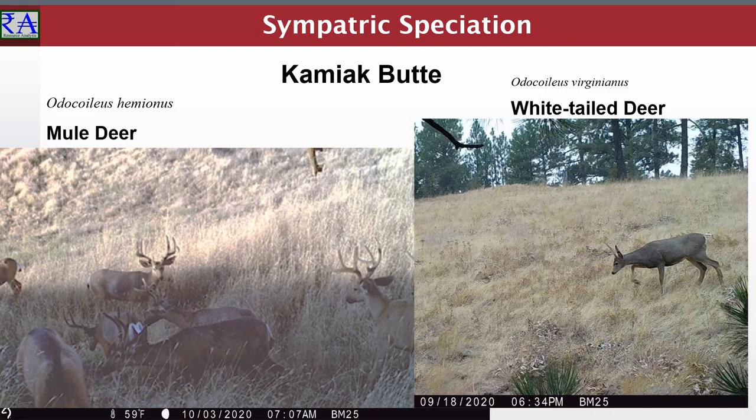Evidence suggests that most male offspring are lost in vitro. Surviving males are sterile. Female offspring often live to maturity, but most of these are infertile. Further evidence suggests that fertile does can only breed with 100% pure males of either species, thus making offspring that are 75% one species and 25% the other. Evidence has not been generated to confirm if embryo males of those unions can survive to maturity, or if they are reproductively fertile.